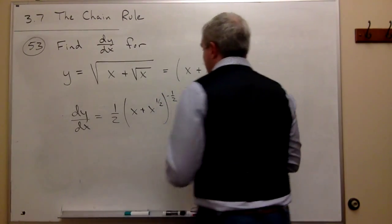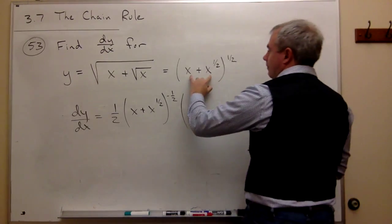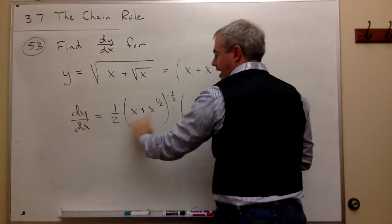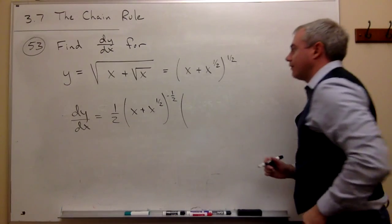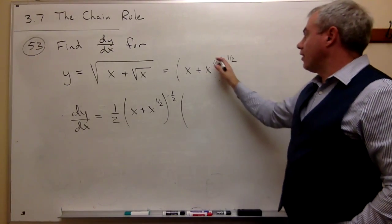times, okay, so I took the derivative of the outside. The derivative of something to the one half is one half, that's something to the negative one half, times the derivative of what's on the inside.